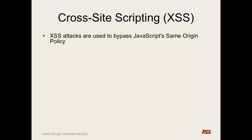Cross-site scripting vulnerabilities allow an attacker to bypass this. Mechanically, what does that mean? If you're bypassing the same-origin policy, that means you're executing attacker-controlled JavaScript in the domain of an important page. If this allows you to bypass Facebook's same-origin policy, now the attacker is executing arbitrary JavaScript within that same domain.